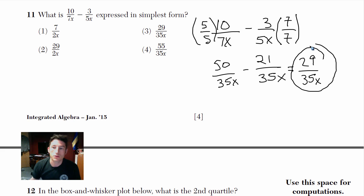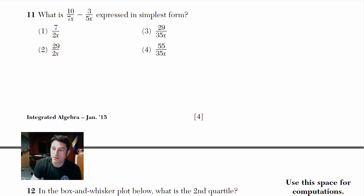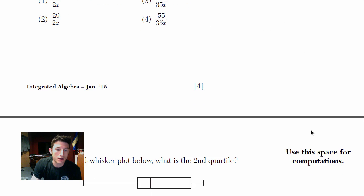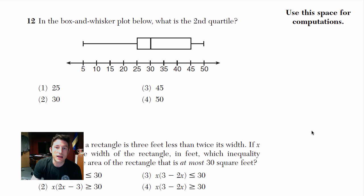So 29 over 35x, choice 3 — you're done. I just took the number on each side and multiplied it by the other. That's it. Now let's move down.